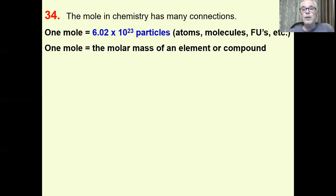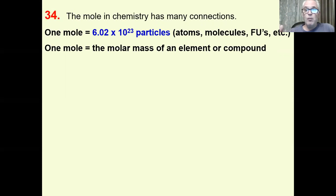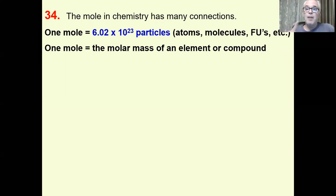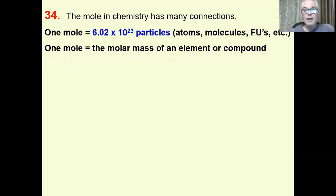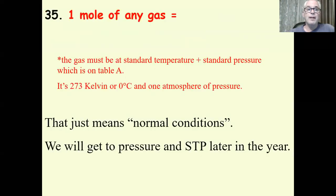One mole is also equal to the molar mass of an element or the molar mass of a compound. We can get the molar mass of any element off the periodic table, and we can get the molar mass of any compound by writing the formula, listing the atoms, multiplying by the number of atoms times the molar mass from the periodic table, and summing them up. We've done this many times already.